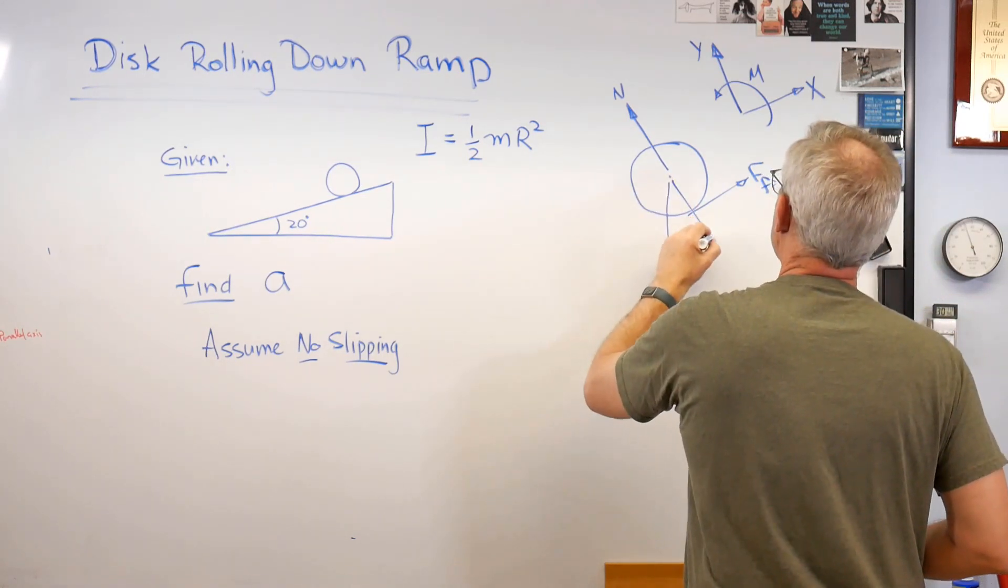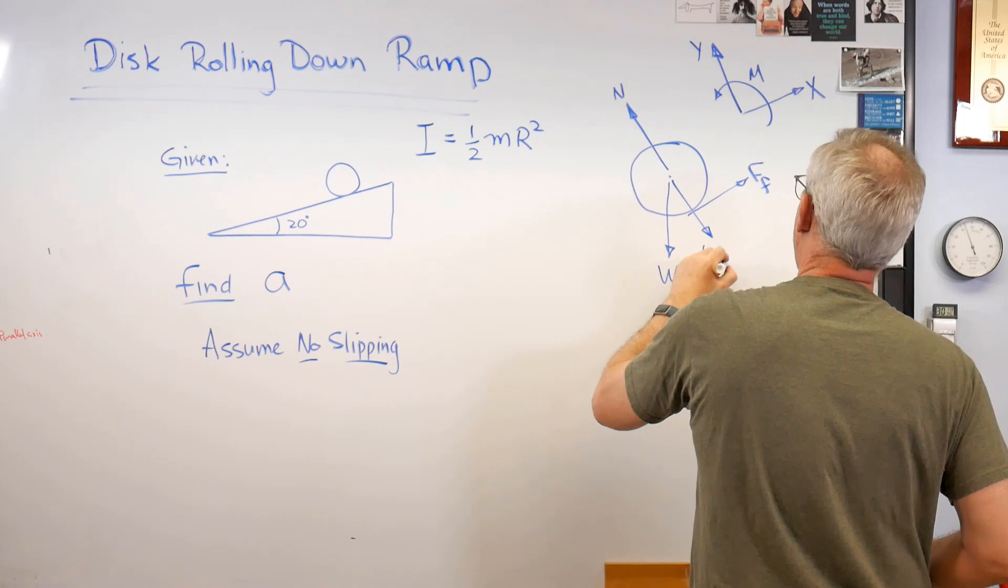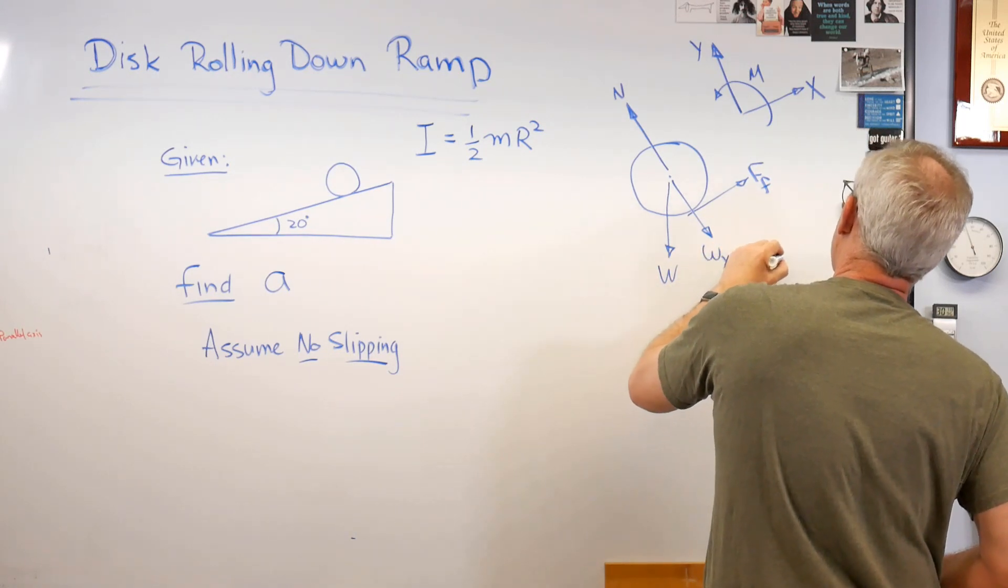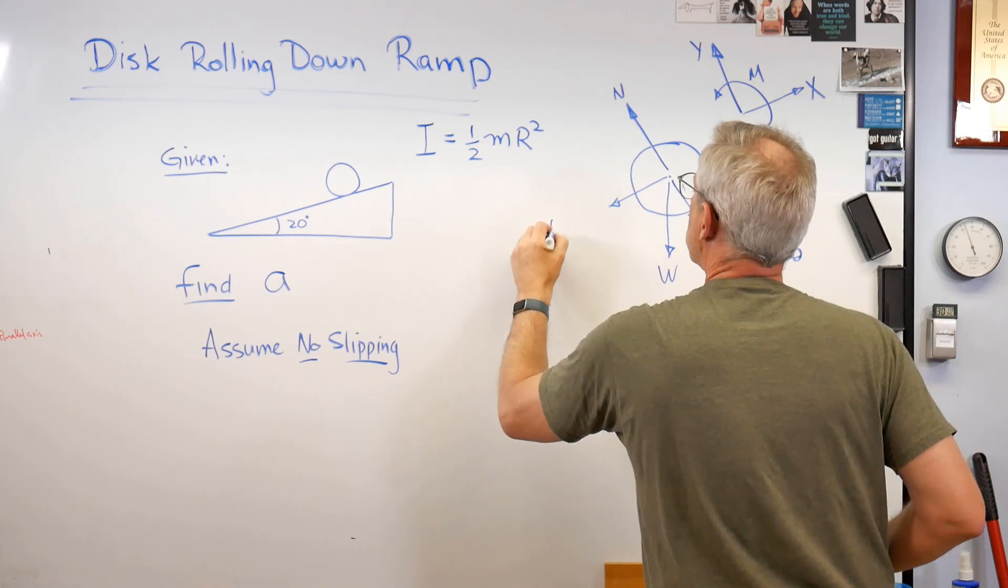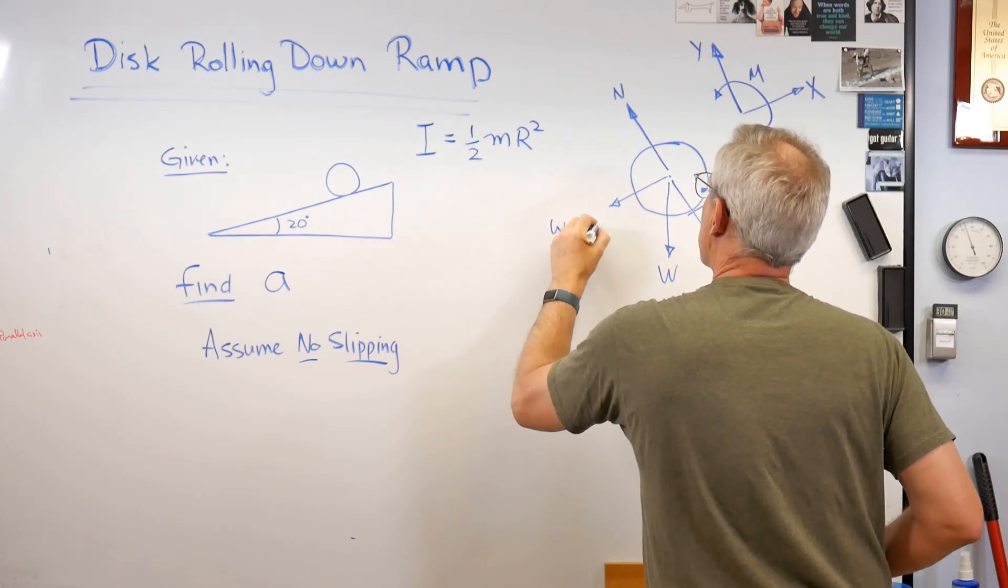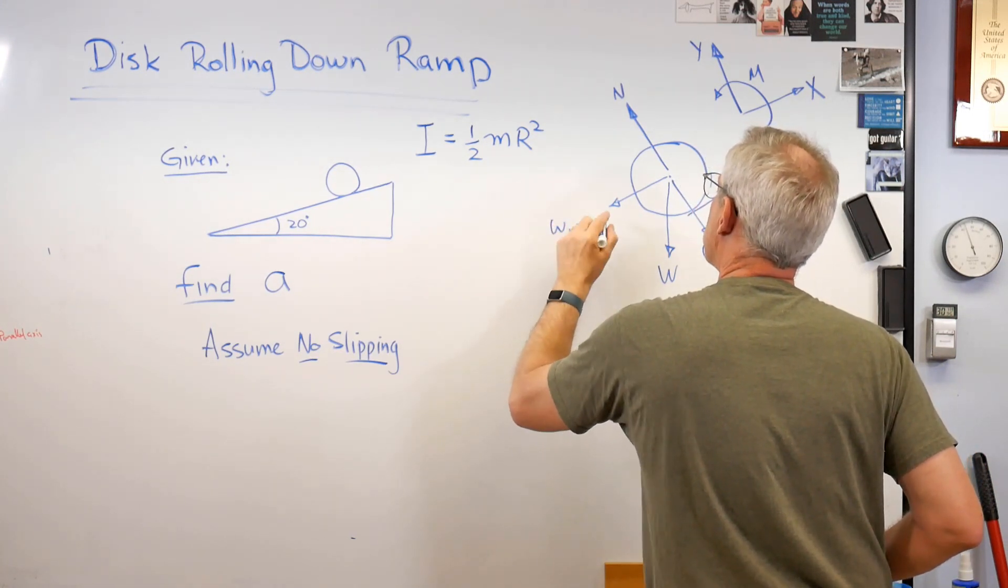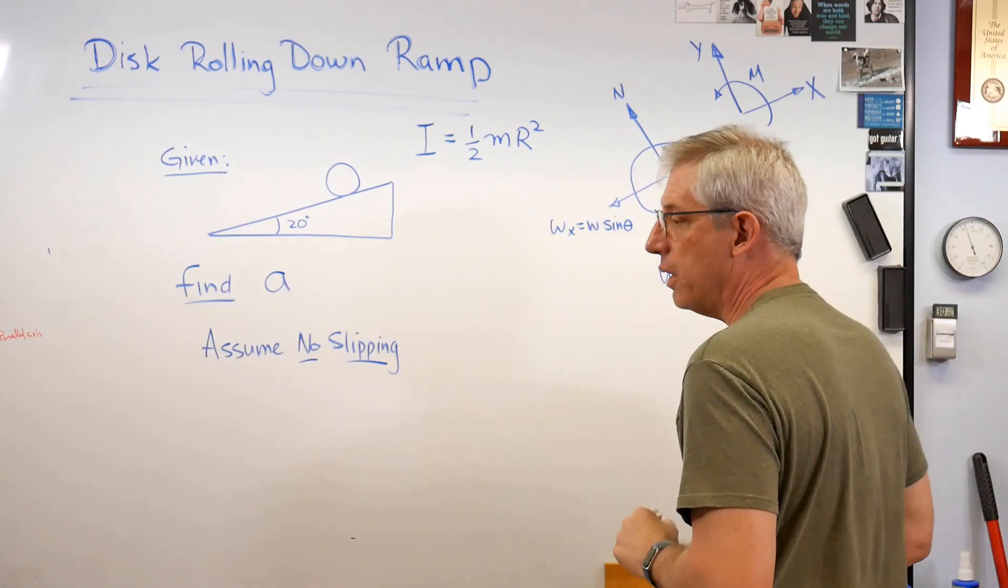And let's see. Let's break this down into w_y, and that's going to be w cosine theta and w_x equals w sine theta. So far, so good.